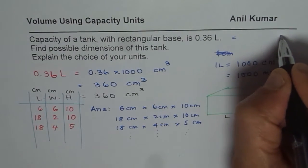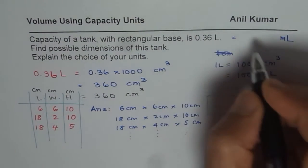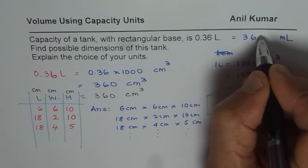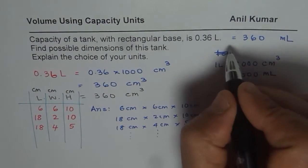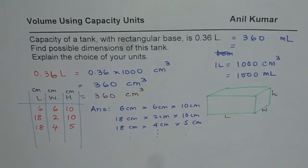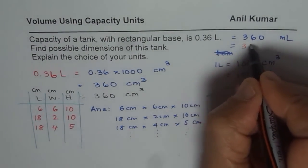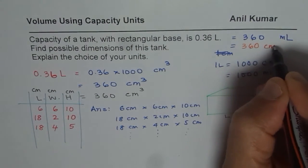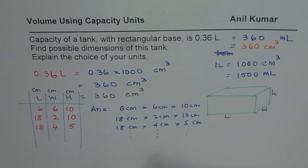So it is important to convert this to milliliters. So multiplying by 1000 we get 360 milliliters which is same as 360 centimeter cube and then move forward.